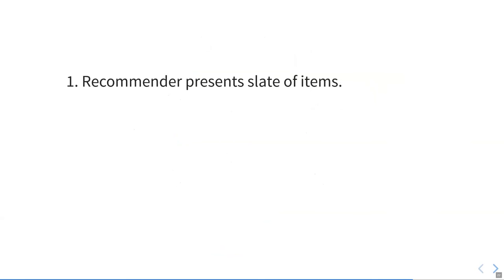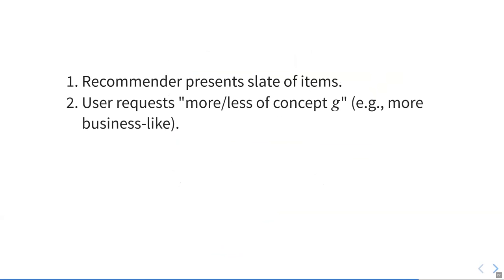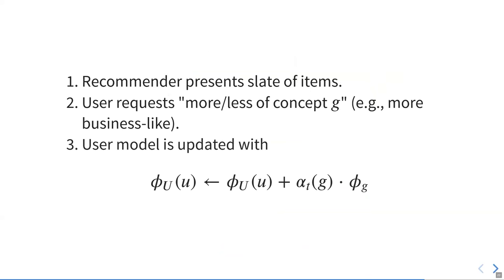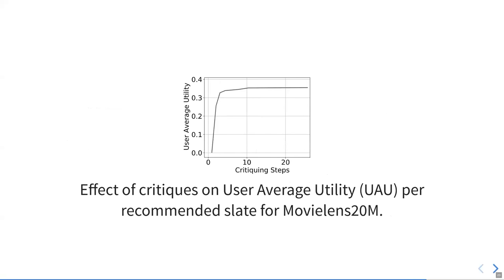To evaluate this, we use a simple critiquing setup where the recommender presents a slate of items. The user requests more or less of some concept G. We update the user model by adding the scaled version of the concept activation vector. Our experiments show that user average utility per slate on MovieLens does increase quite a bit using these types of critiques. In the paper, we also use a variety of metrics to measure this and report, and of course also evaluate on synthetic data.